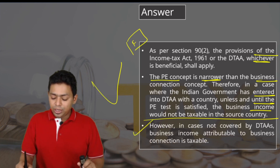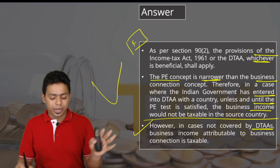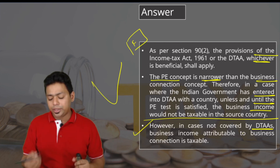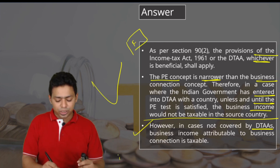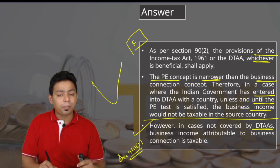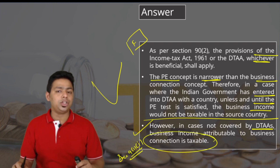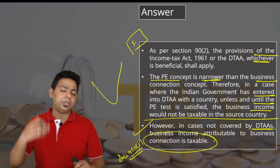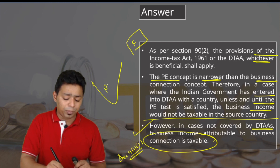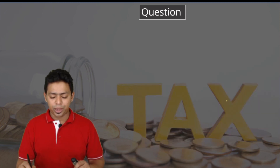However, in cases not covered by DTAA — that is, if there is no DTAA — then Section 9(1)(1) will apply. When Section 9(1)(1) applies, the concept of business connection is more important. If there is a business connection in India, even if you don't have a PE in India, the income becomes taxable.